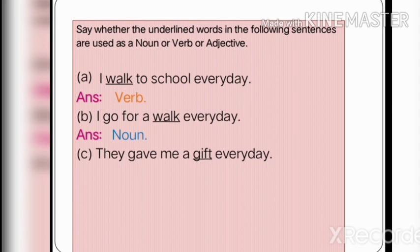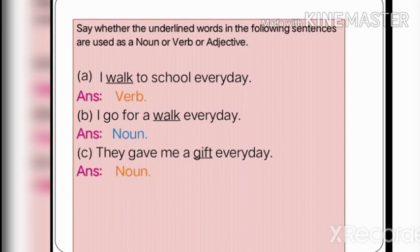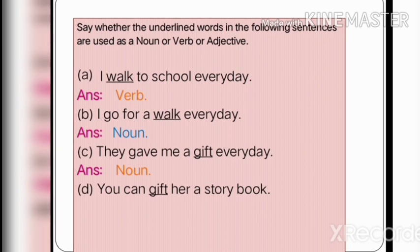Now look at sentence C: 'They gave me a gift every day.' The underlined word is 'gift' and it works as a noun in this sentence, because it is preceded by 'me.' Now look at sentence D: 'You can gift her a storybook.' In this sentence 'gift' comes along with the modal auxiliary verb 'can' and is preceded by the subject 'you.'